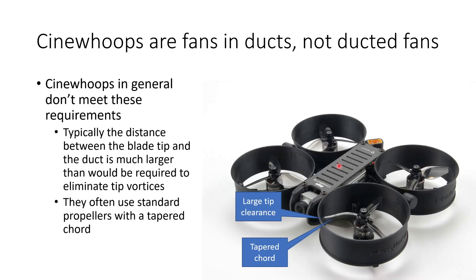What this means is that CineWhoops are fans in ducts — they're not ducted fans. They don't meet these requirements. Typically the distance between the blade tip and the duct is very much larger than what would be required to gain any benefit in terms of efficiency or thrust — that gap is way more than a quarter of a millimeter. They also typically use standard propellers with a tapered chord, which are not the right type of propeller to get the maximum benefit from a duct. You would really want something very bullnosed.